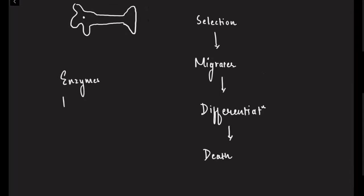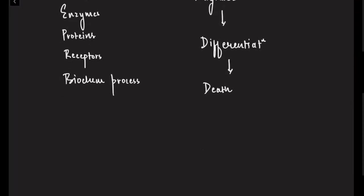This entire process involves a lot of proteins, enzymes, receptors, and biochemical processes. These biochemical processes are genetically encoded — they are encoded by specific genes.